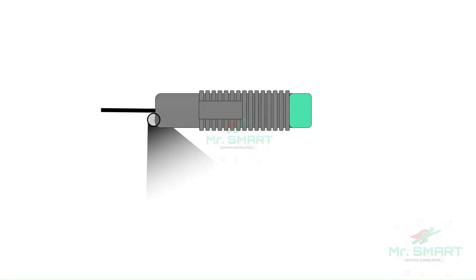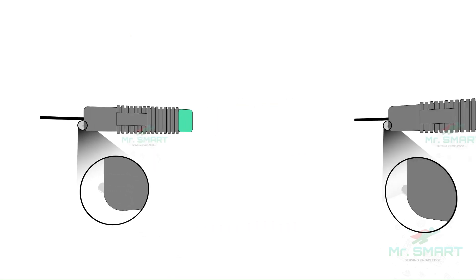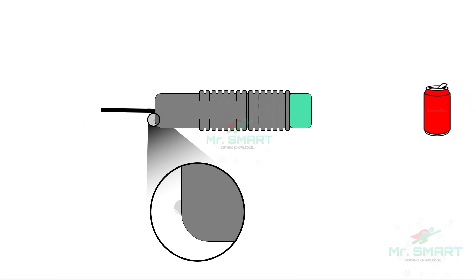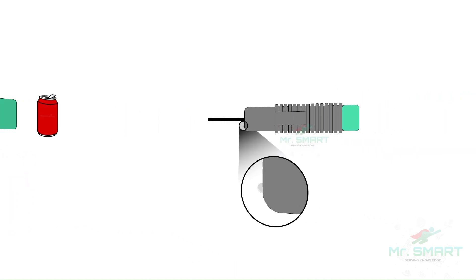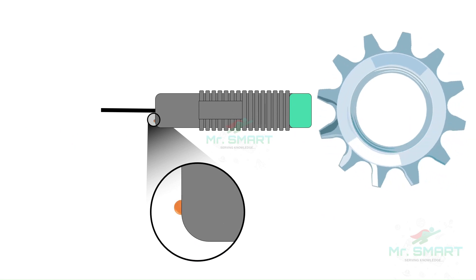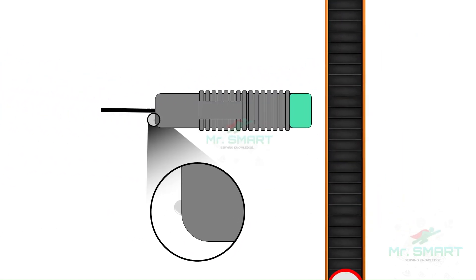An inductive proximity sensor is used for specific applications in industry: detecting the presence of metal cans, monitoring the revolution of metallic gears, and counting the metal parts moving over a conveyor. Have you noticed something? In all these applications, only a metal object or part is detected.